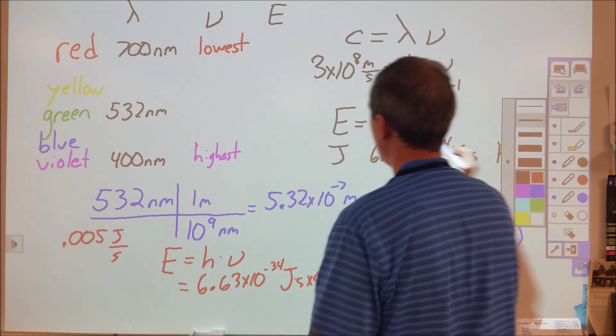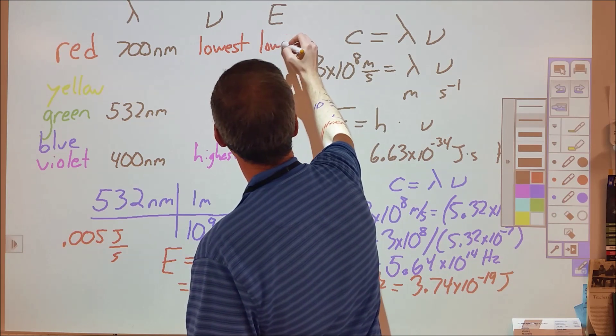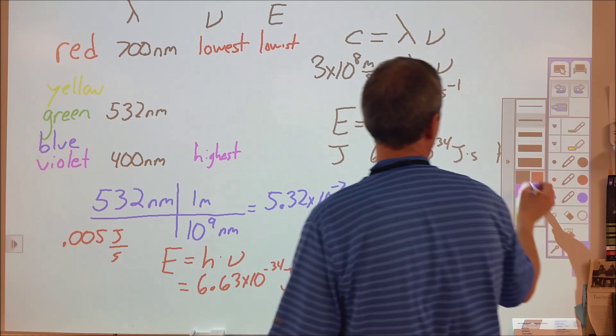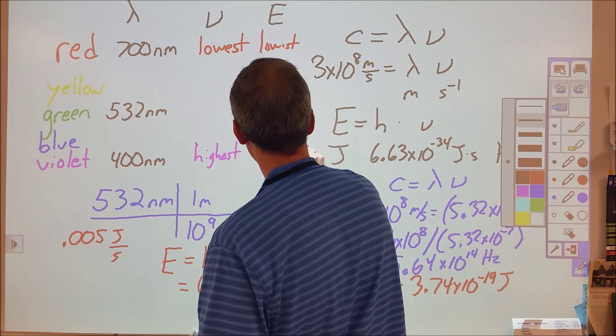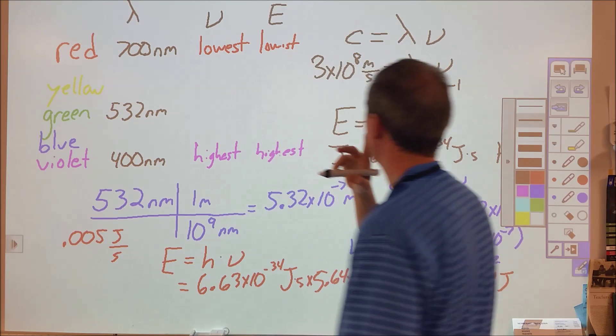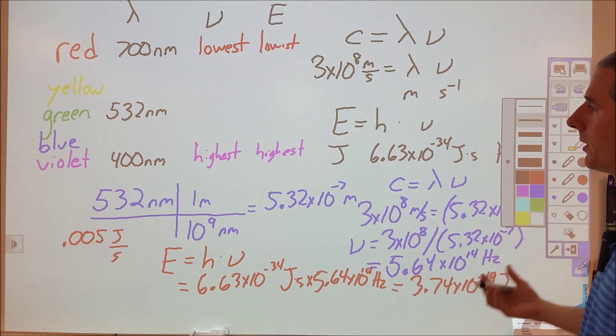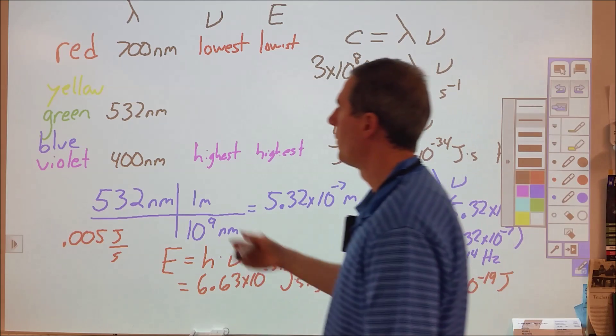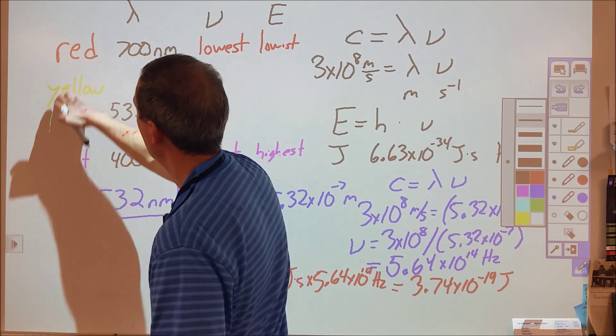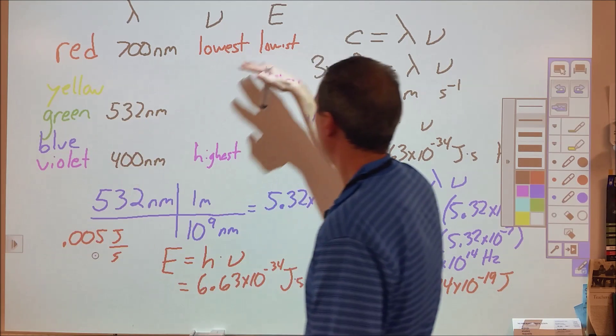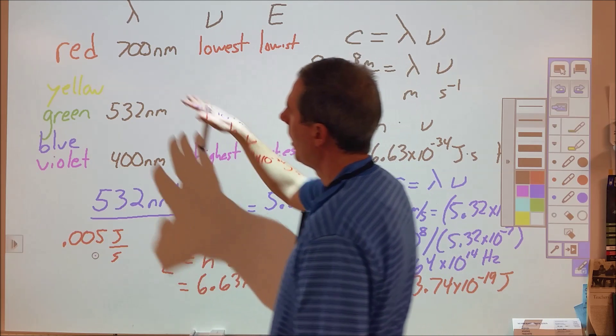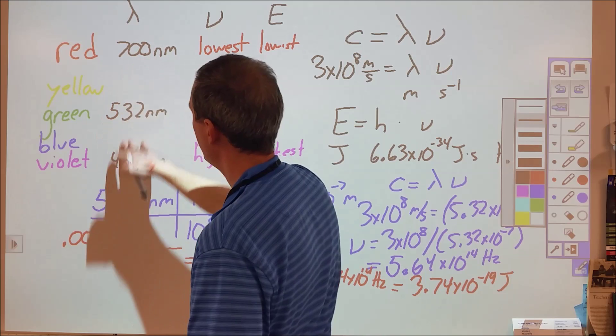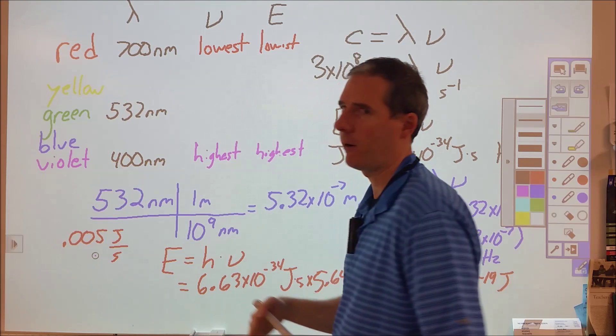In terms of energy, red would have the lowest energy and violet would have the highest energy. You can see that in our photoelectric effect demo. As we progress from red to orange to yellow to green to blue to violet, we're going to go from lower energy states to higher energy states. Our wavelengths are going to go from longer to shorter, and our frequencies are going to go from lower to higher.